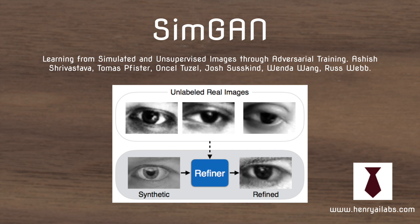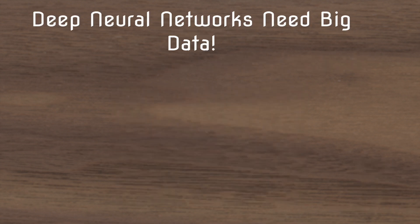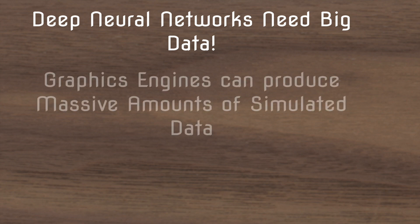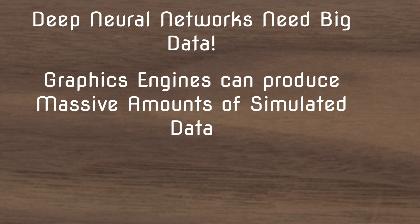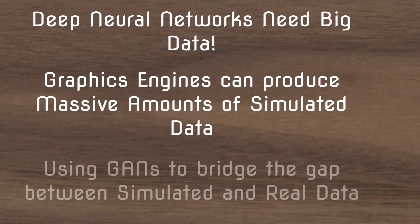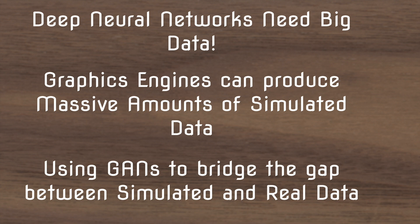This video will explain the SimGAN model. Deep neural networks currently need big datasets in order to learn useful representations, but graphics engines are able to produce massive amounts of simulated data. In addition to being really big datasets, they're also already labeled. So the idea in SimGAN is to use GANs to bridge the gap between the simulated and real data, to perform tasks with real data.